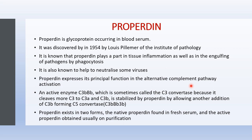Properdin expresses its principal function in the alternative complement pathway. Properdin activates an enzyme called C3bBb, also known as C3 convertase. This C3 convertase combines with properdin and gives rise to an enzyme called C5 convertase. C3 convertase cleaves more C3 into C3a and C3b, and is stabilized by properdin. When an additional C3b is added, it becomes C5 convertase.